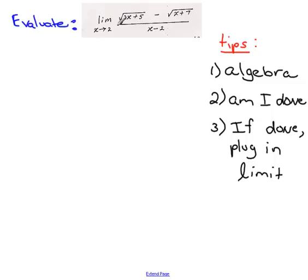It says, evaluate the limit as x approaches 2 of root 2x plus 5 minus root x plus 7 divided by x minus 2. So I took the liberty of writing some tips for you guys on the side here. Let's look at them.